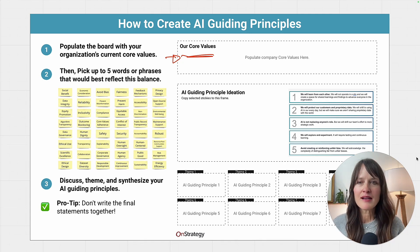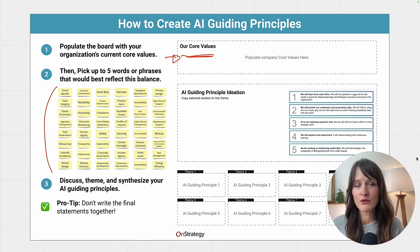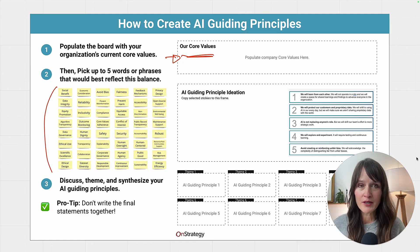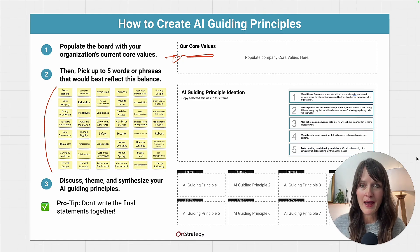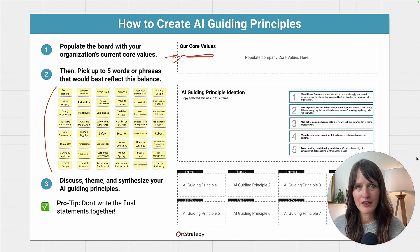The next thing you want to do is identify the different themes or areas that you would like to develop guiding principles around. We've got a whole list here for you. One thing you can do is if you use our Miro board — check out the link, click on it, it'll take you to the Miro board — you can use the voting piece in Miro to actually vote and ask your team which ones you want to have a guiding principle around. Another thought is to pre-populate some topics that you want to make sure you have guiding principles around.